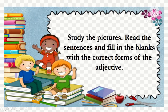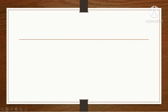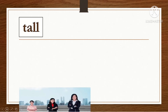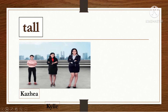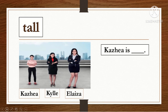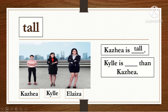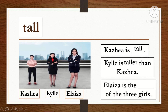Study the pictures. Read the sentences and fill in the blanks with the correct forms of adjective. The adjective is tall — let's compare three girls: Kazaya, Kyle, and Eliza. Kazaya is tall. Kyle is taller than Kazaya. Eliza is the tallest of the three girls.